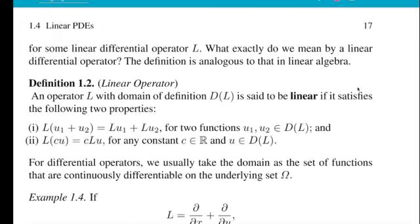Let's properly define what a linear operator is. So a linear operator is an operator L. It has a domain of definition which I call D(L). And now it is linear if it has two properties.